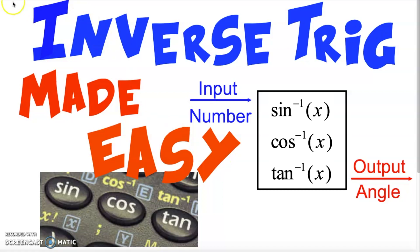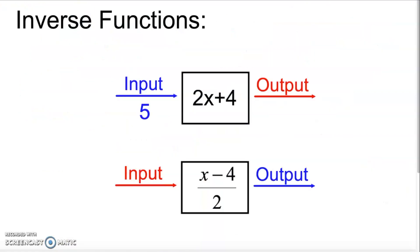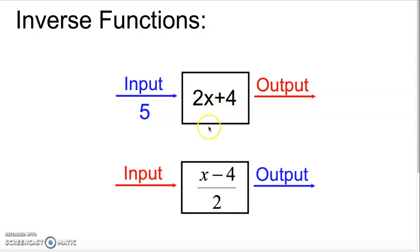Before we get into that, let's do a quick review of what a function and an inverse function are. So if we take a look at a basic function, like f of x equals 2x plus 4, a good way to think about how a function works is as an input-output machine — there's some input that goes in, the function does whatever it does, and it produces some output.